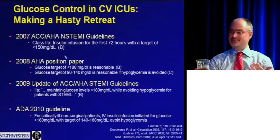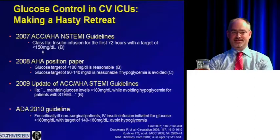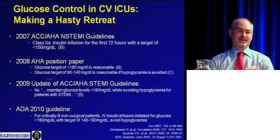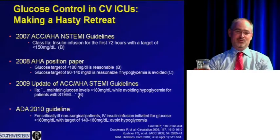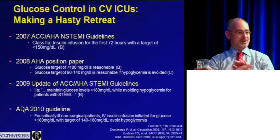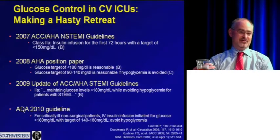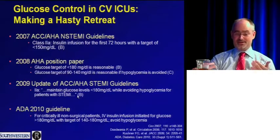We've made a rapid retreat over the last three years. In 2007, the target was liberalized to 150; in 2008, it became less than 180; in 2009, the STEMI guidelines downgraded the indication to Level B with a target of 180. Finally, we have two consistent recommendations: less than 180 should be the target. The ADA now endorses a target of 180 for critically ill non-surgical patients across all ICUs, and we should be much more liberal with our application of insulin.